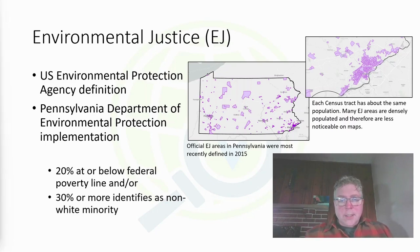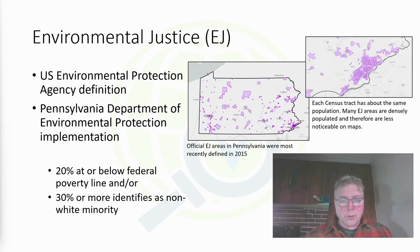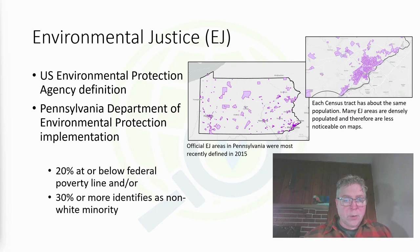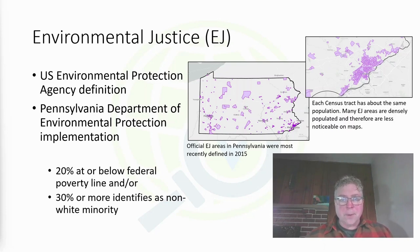The United States Environmental Protection Agency defines environmental justice as follows: Environmental justice is the fair treatment and meaningful involvement of all people, regardless of race, color, national origin, or income, with respect to the development, implementation, and enforcement of environmental laws, regulations, and policies. This goal will be achieved when everyone enjoys the same degree of protection from environmental health and hazards, and equal access to the decision-making process to have a healthy environment in which to live, learn, and work. That's the U.S. EPA's definition.